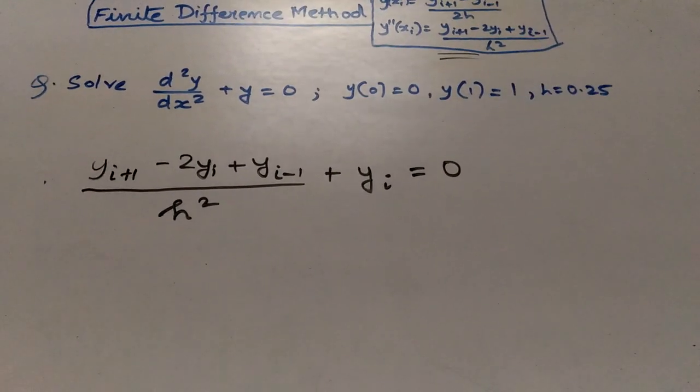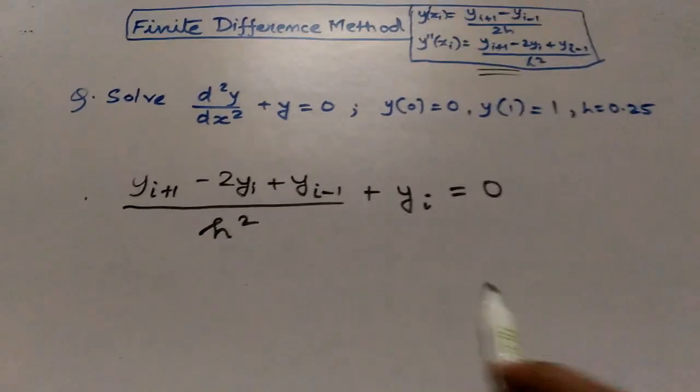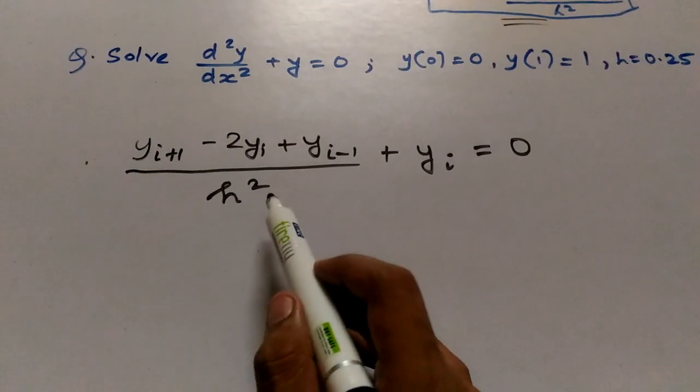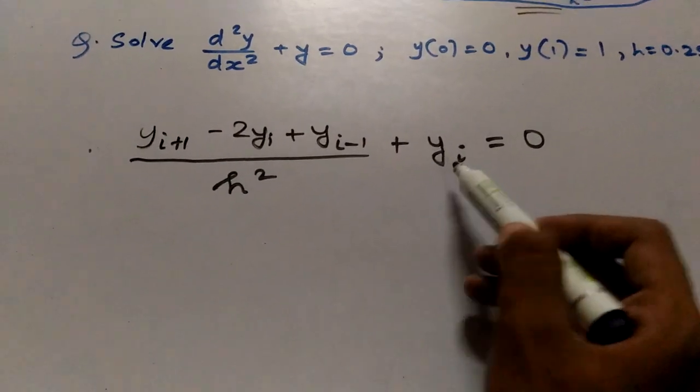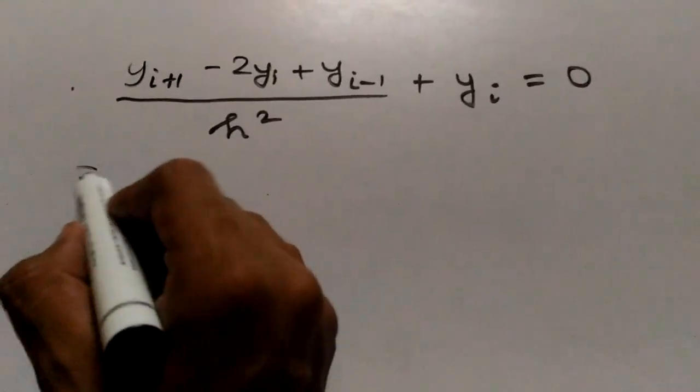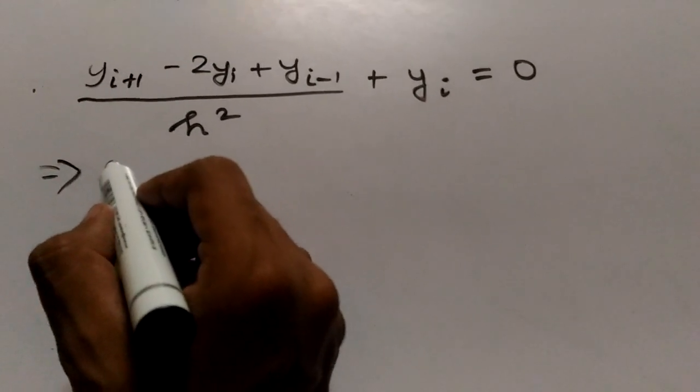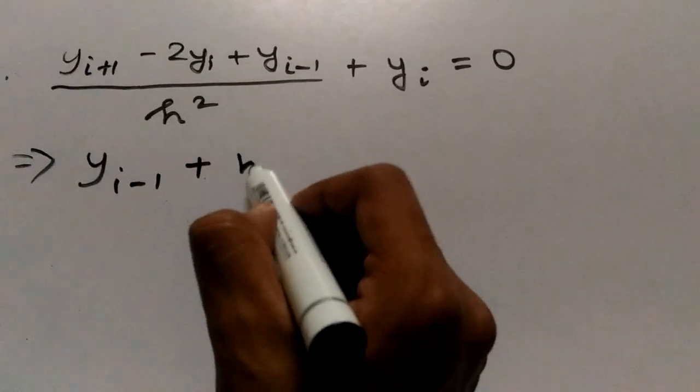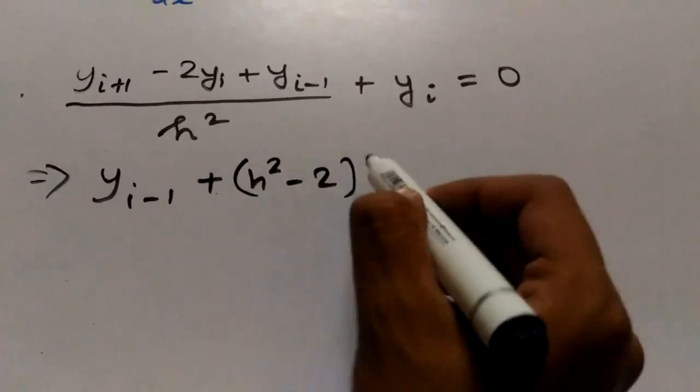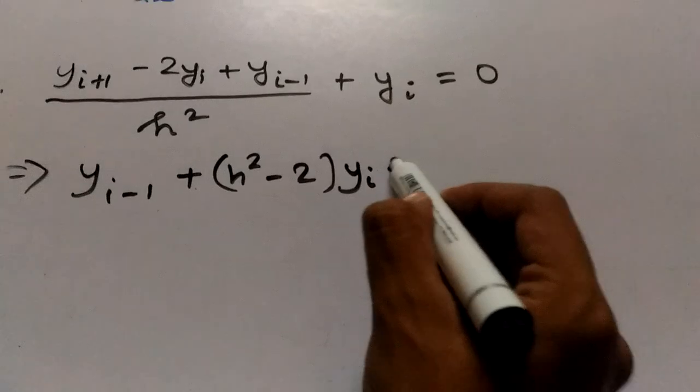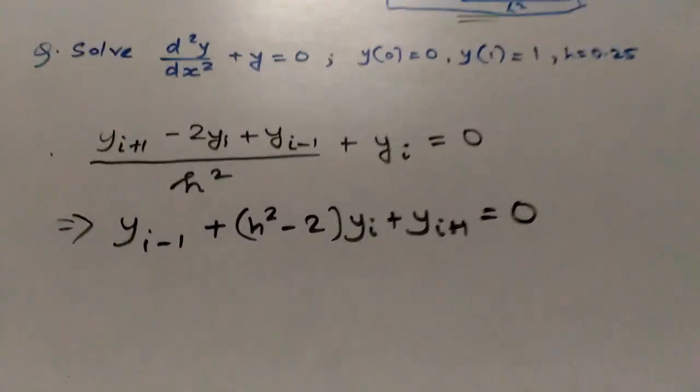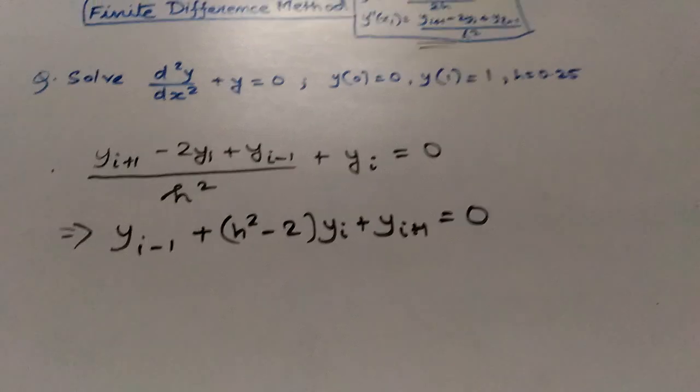Now I will make this equation linear by multiplying h² with y_i and 0. Therefore, our equation will become y_{i-1} plus (h² minus 2) times y_i plus y_{i+1} equals 0. So this is our equation.